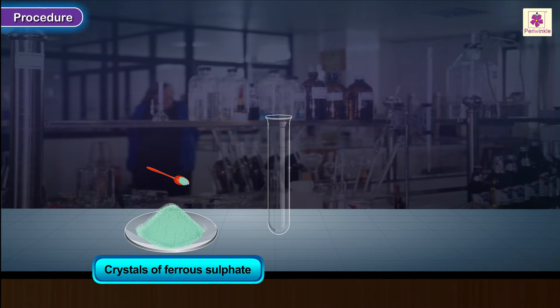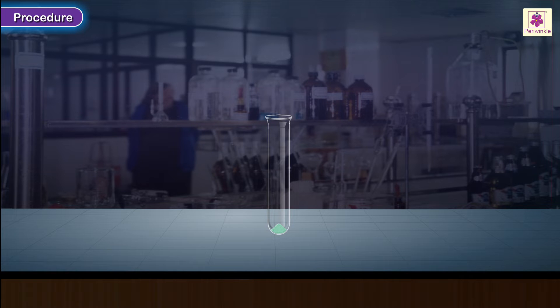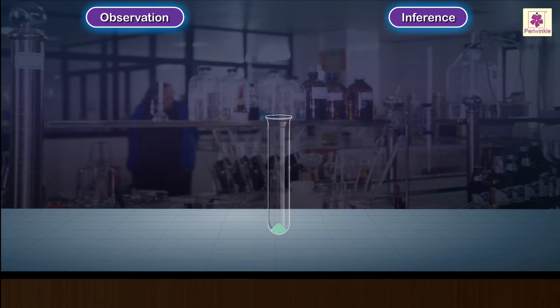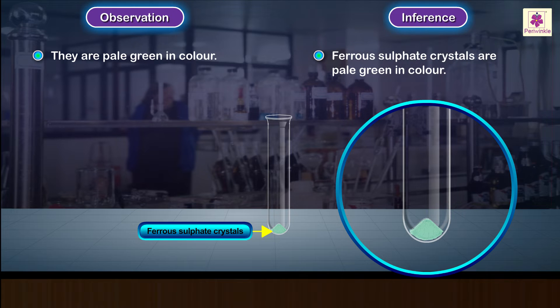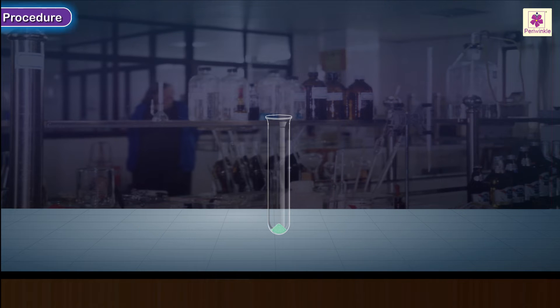Procedure: Take a few crystals of ferrous sulfate in a hard glass test tube. Observe and note down their color. Observation and inference: They are pale green in color. Ferrous sulfate crystals are pale green in color.